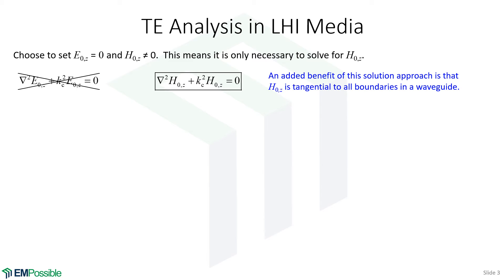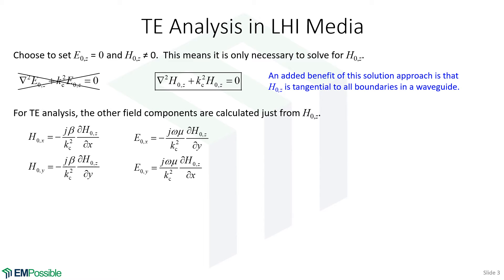Given that solution, we can go back to our expressions for Ex, Ey, Hx, and Hy in terms of Ez and Hz and solve for the other four. These equations are those expressions in terms of E0z and H0z, except I have set E0z to zero. So once we find a solution to H0z for TE modes, we can use these slightly simplified expressions to find the other four field components.